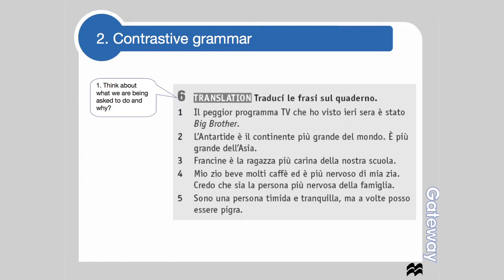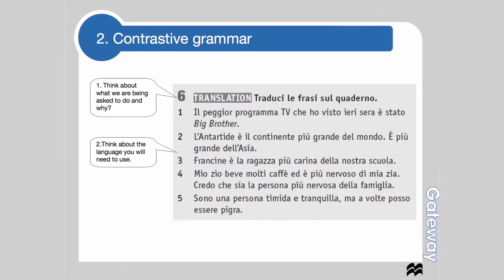Once you've established what you need to do in this particular exercise, think about the language you're going to need to use. What language are they asking you to use? Are there any traps or things to remember to make sure you perform the activity correctly? In this case, it's key to think about when the action happened — whether we're looking at the past tense or the present tense, and more importantly, superlatives. The benefits of working with contrastive grammar are that they help you understand the true sense of a sentence, notice patterns and similarities with your own language, and identify the key differences you'll need to remember for future reference.